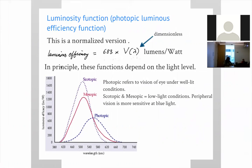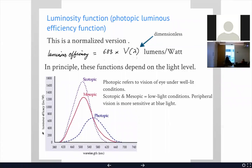These functions depend on light level — bright daylight conditions versus very dim dusk conditions give very different results. The photopic response (lumens per watt versus wavelength) refers to the eye's response under well-lit conditions. This is what your eye does during daytime.